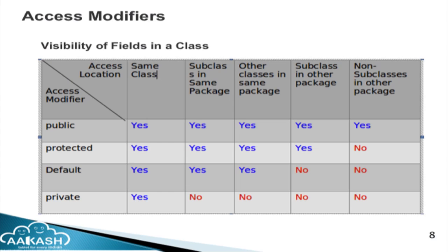Now I am starting with access modifiers. In the previous part we covered classes and objects, overloading, and inheritance. What is an access modifier? It controls whether a variable or method can be accessed in a subclass or from another package. Here I have a table of the different access modifiers in Java.